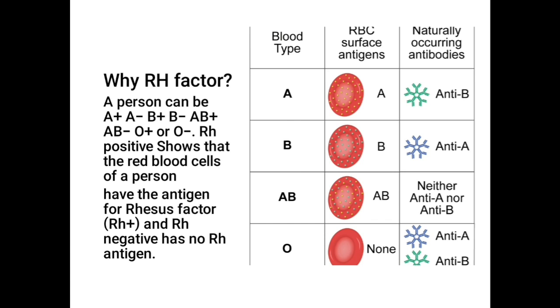There are eight blood groups that are common: A positive, A negative, B positive, B negative, AB positive, AB negative, O positive, and O negative.